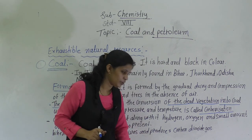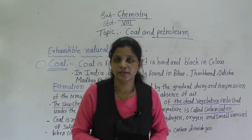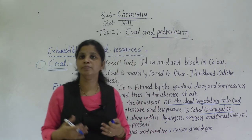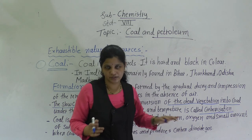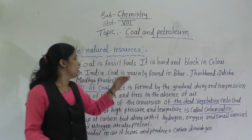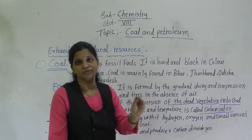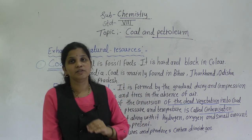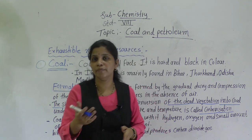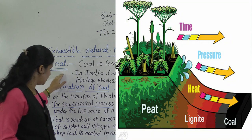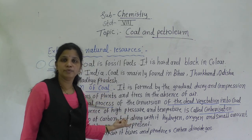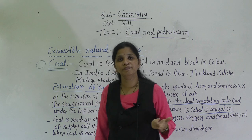When coal is heated in air, it burns and produces carbon dioxide gas. Coal is formed by the conversion of dead plants — fossil fuels are formed from dead plants and animals, but coal specifically is formed mostly from dead plants.